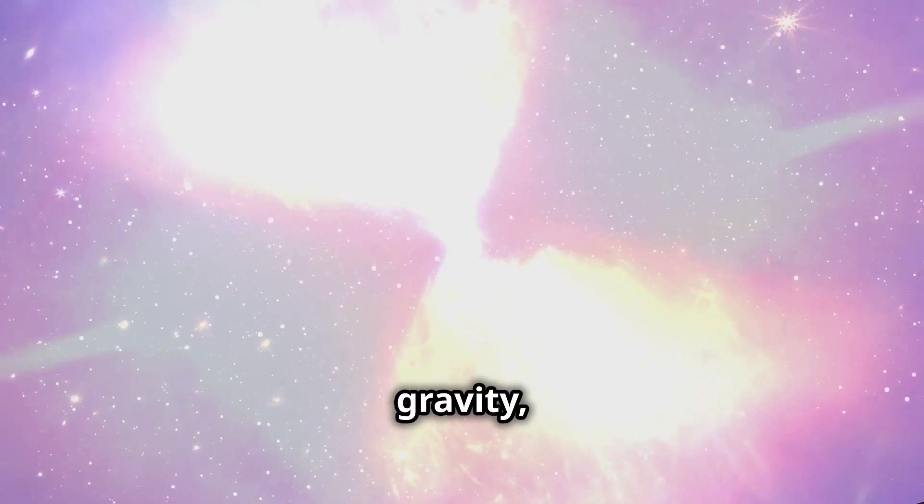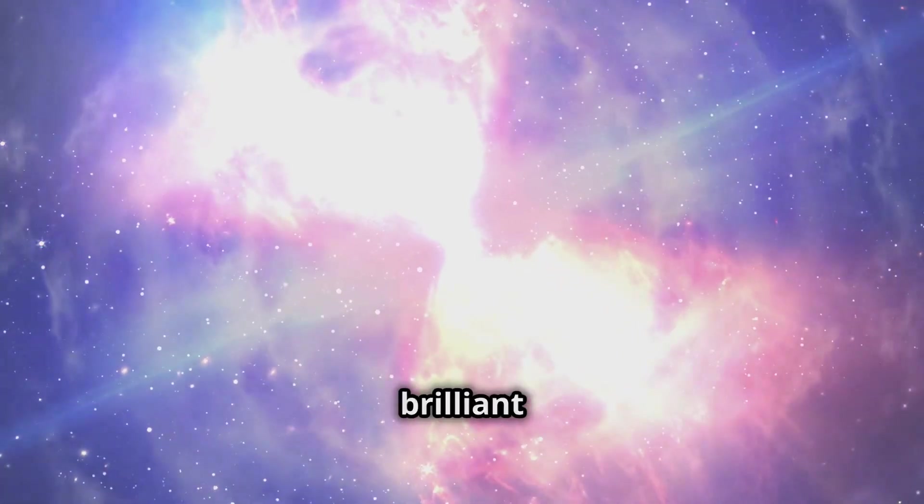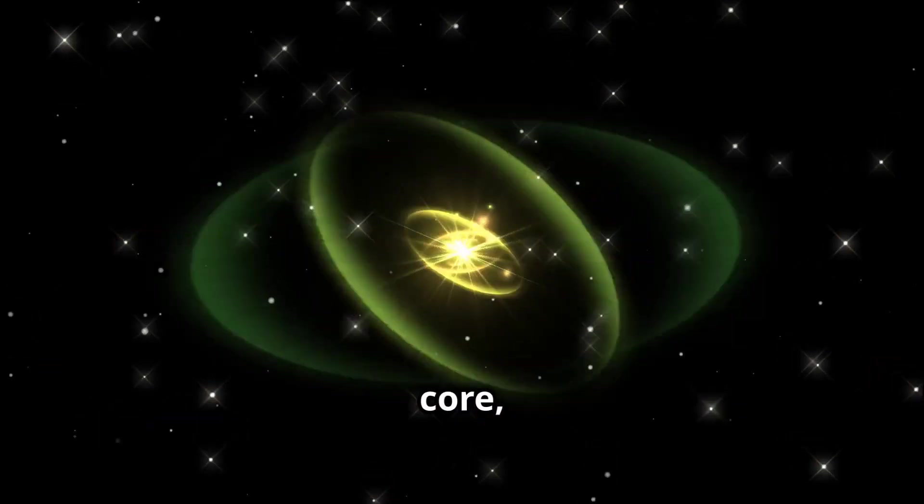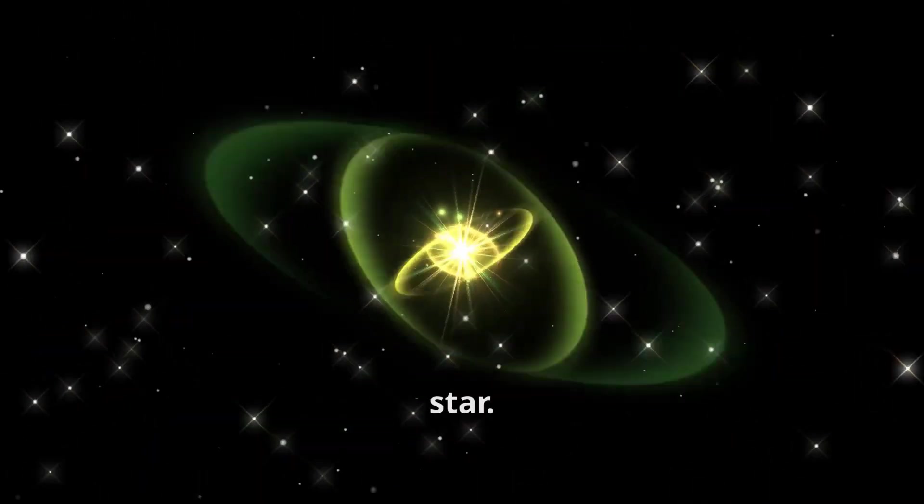What's left behind? A core so dense that it boggles the mind. This core, my friends, is a neutron star. A typical neutron star is only about 12 miles across, yet it contains more mass than our entire sun.